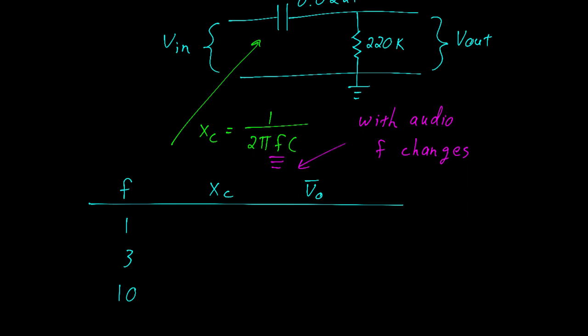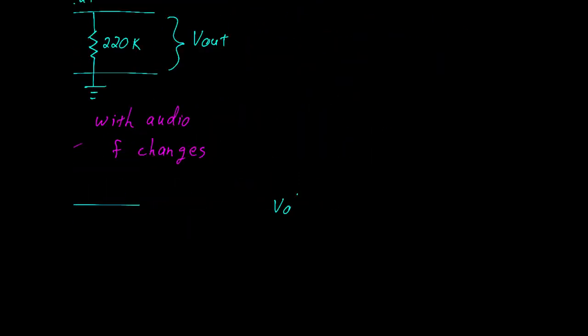Using the equation in green, you can calculate the capacitive reactance for every given frequency. The first one is 8 mega ohms. You can calculate the phasor output voltage using the voltage divider rule. Here the output is the real part divided by the real minus capacitive reactance.